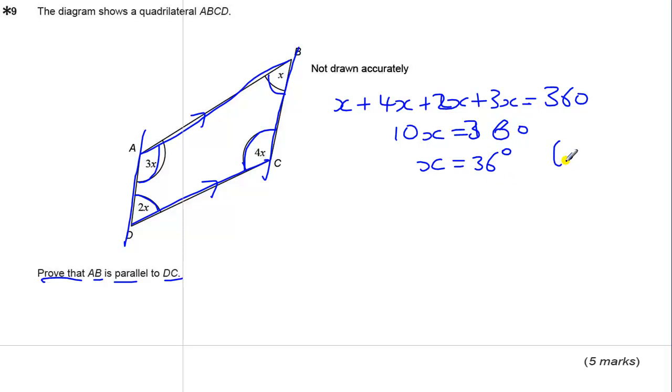Now that would get you 3 marks. You get 1 for the answer 36, 1 for the method on this, and 1 for the method there. But if you just went straight to this, 10x equals 360, that would give you 2 method marks and then 1 for the answer, x equals 36.